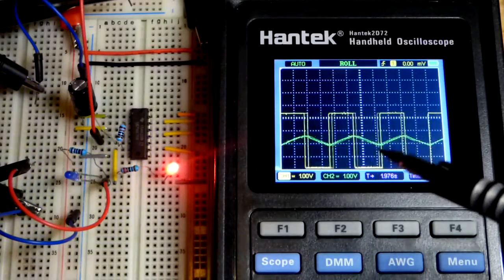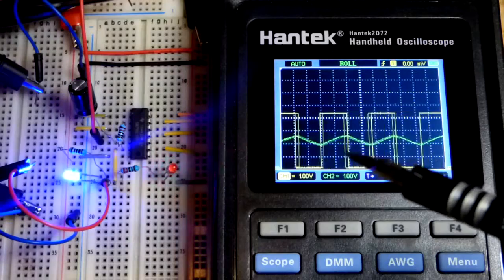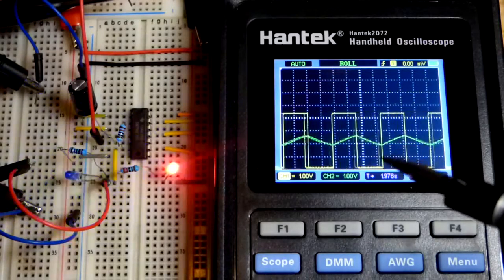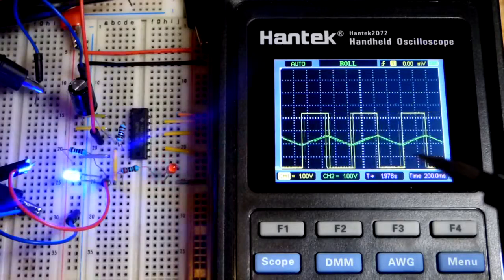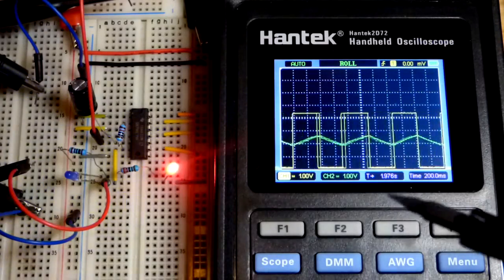And the green line there, that's actually the capacitor charging and discharging. So you can see when the capacitor charges to a high enough value, then the output goes low.